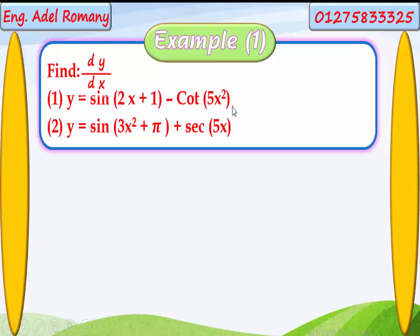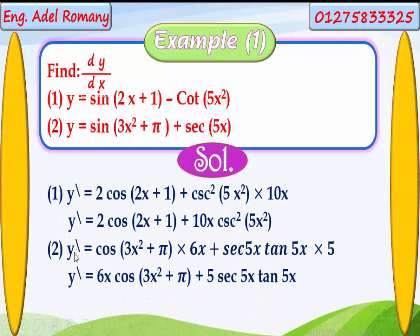Solution for problem 1: y dash. For sin(2x plus 1), the derivative of sine is cosine, so it becomes cosine(2x plus 1) — the inside function stays the same. We then multiply by the derivative of the inside: the derivative of 2x plus 1 is 2. So we get 2 cosine(2x plus 1).